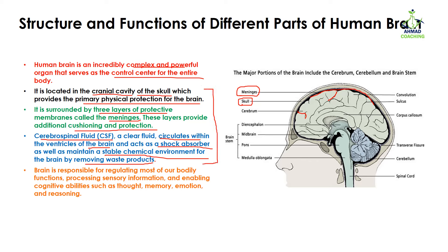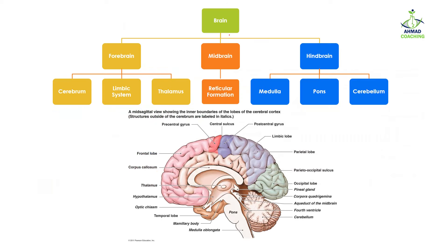The brain is responsible for regulating bodily functions, processing sensory information, and enabling cognitive abilities such as thought, memory, emotions, and reasoning. The brain is divided into three parts: the forebrain — present at the front — the midbrain, in the middle, and the hindbrain, at the back of the skull. The forebrain is further divided into the cerebrum, limbic system, and thalamus. The midbrain contains the reticular formation, and the hindbrain is divided into the medulla, pons, and cerebellum.